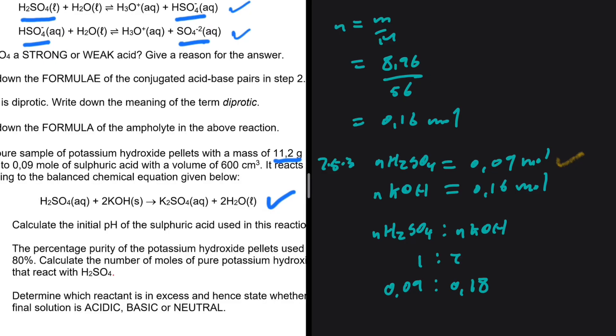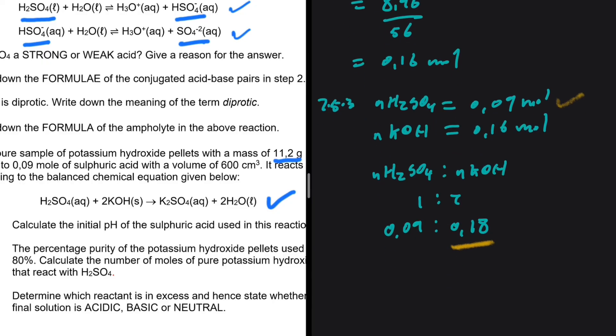So these are the number of moles that we need for H2SO4 to react completely. But as you can see, what we have is less than that. So that shows us that KOH is our limiting reactant. So H2SO4 is in excess. So if H2SO4 is in excess, then the final solution should be acidic.